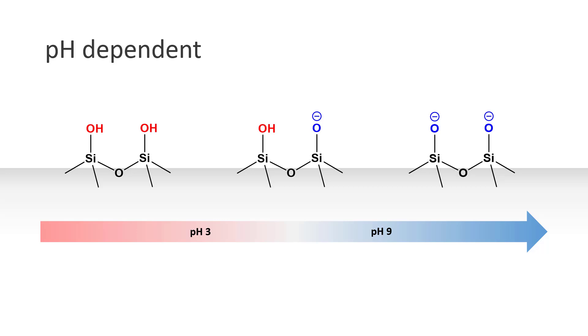In this experiment, the buffer solution we will be using has a pH of 7.7, which is pretty close to pH 9. Therefore, it is safe to assume that the silanol groups on the silica surface are dominantly deprotonated.